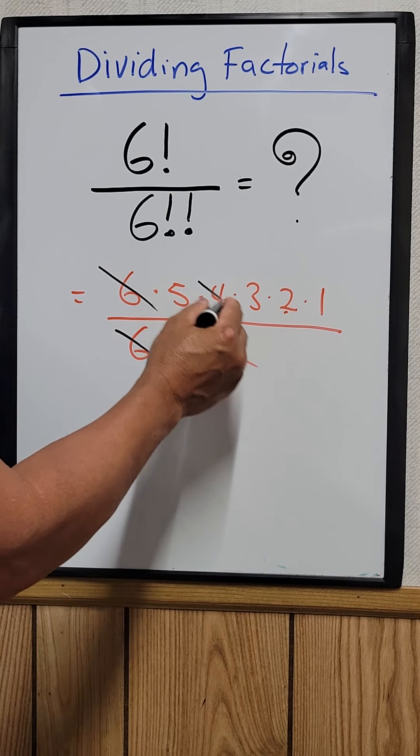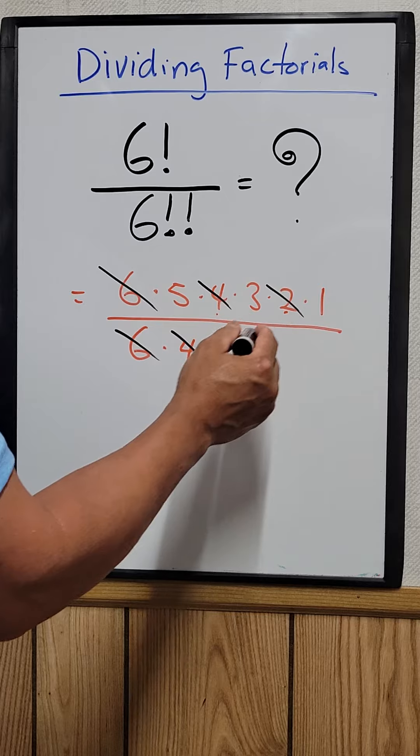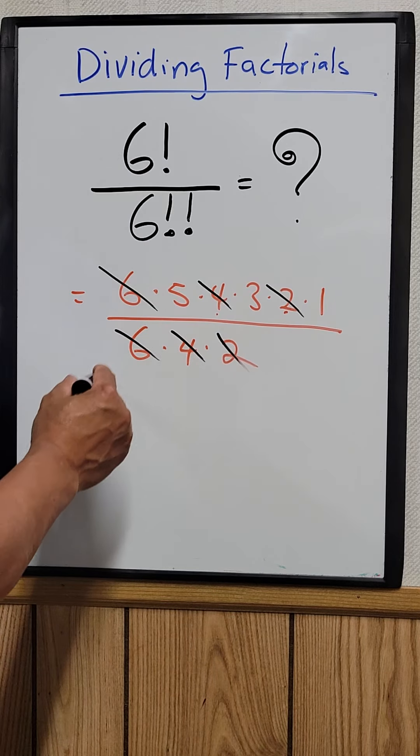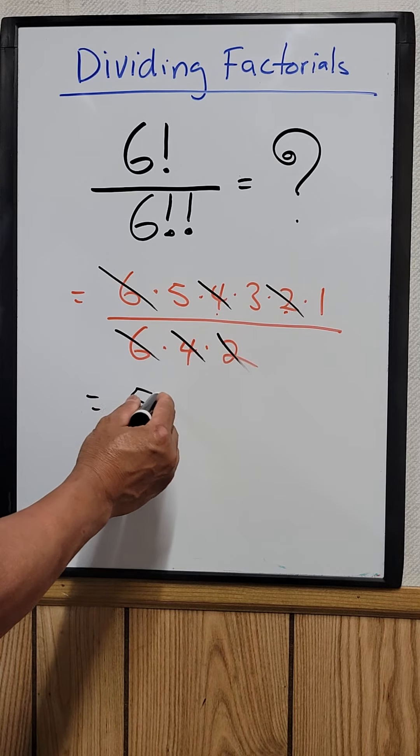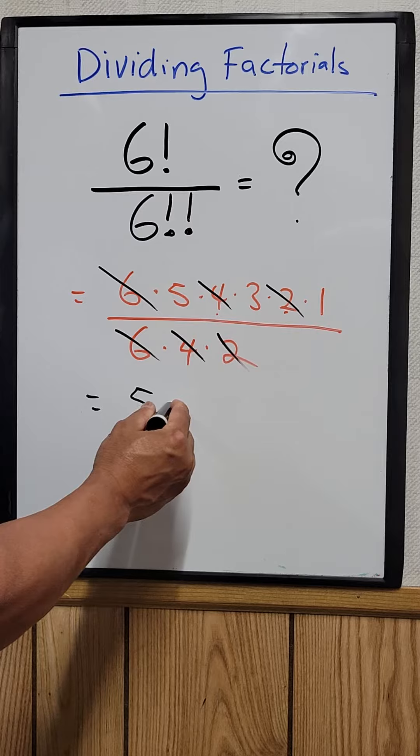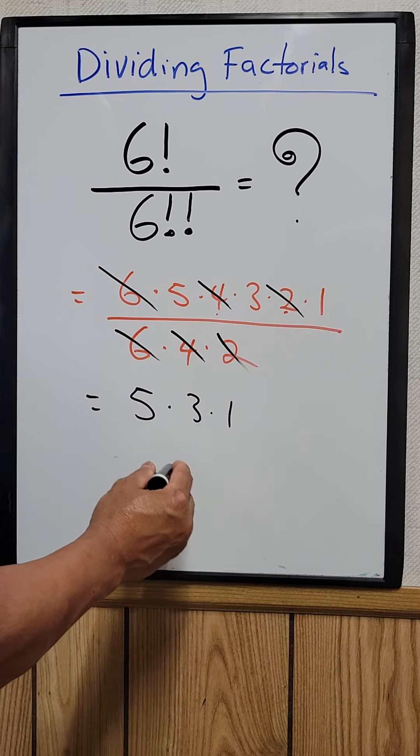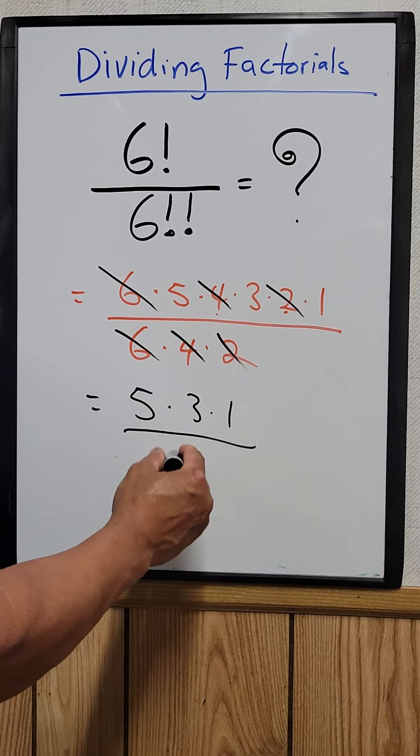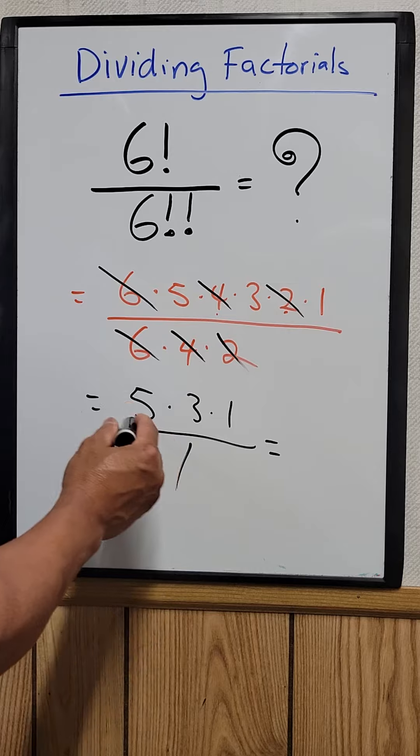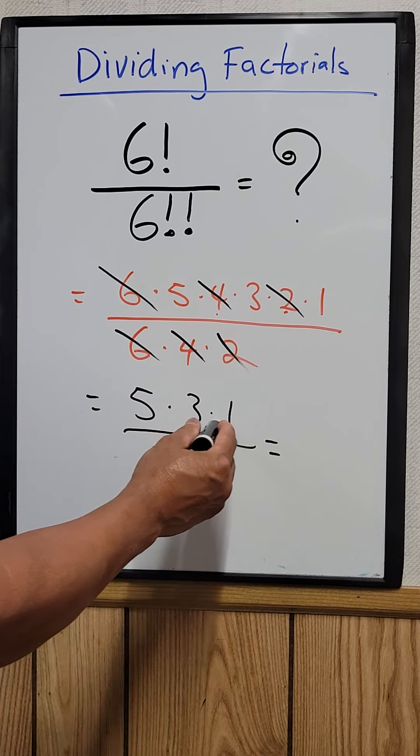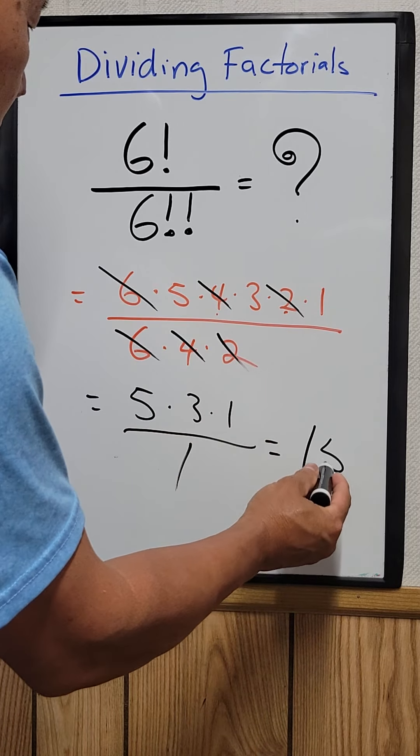Cancel the 4, cancel the 2. Okay, all you have left is equal to 5 times 3 times 1 divided by what? The bottom one, just 1. So 5 times 3 times 1, which is 15. So the answer is 15.